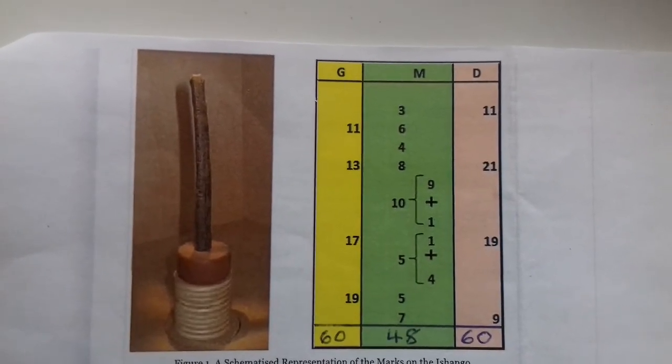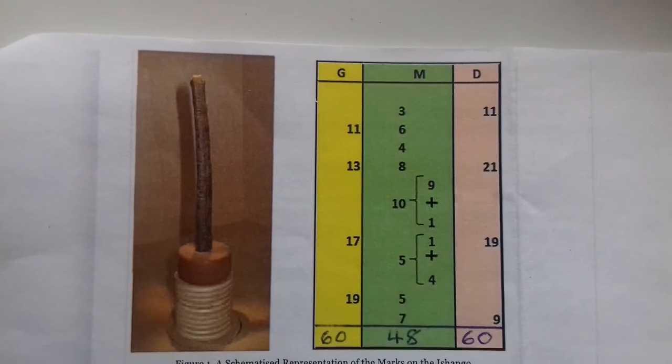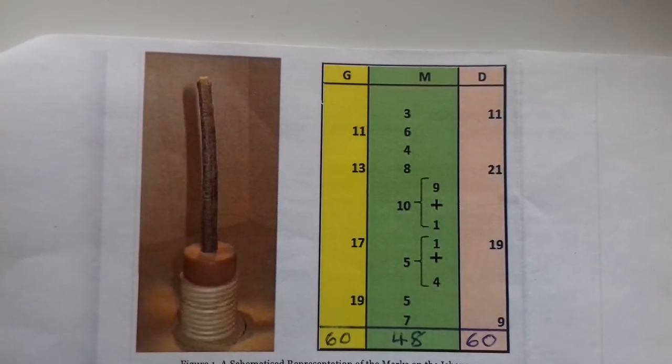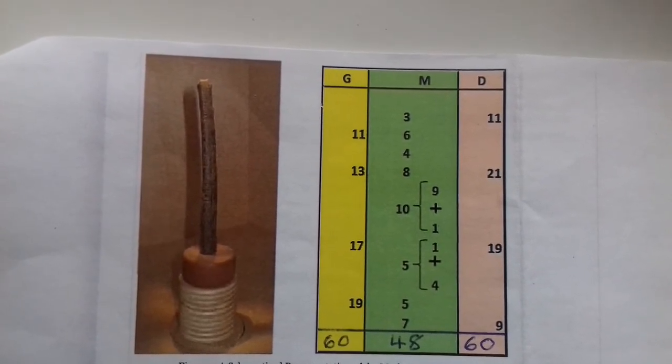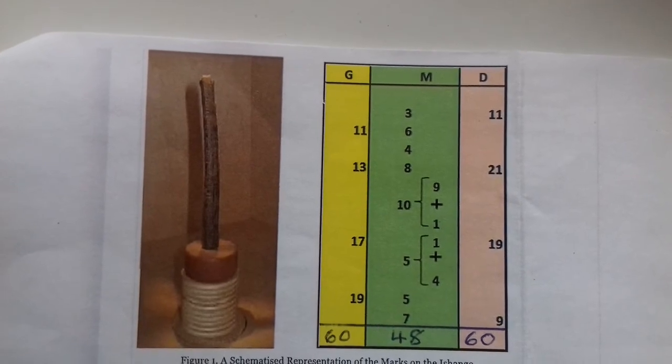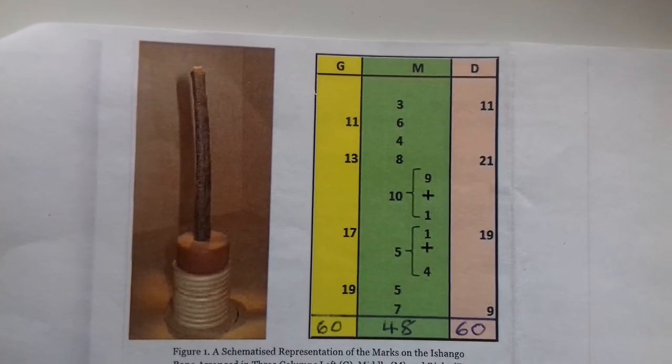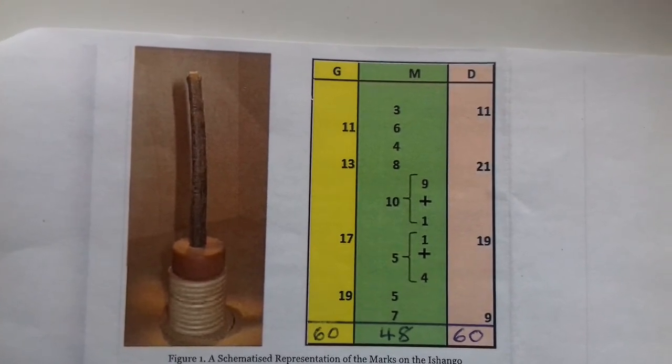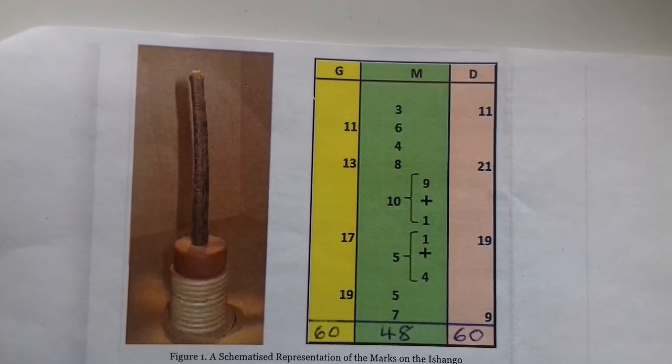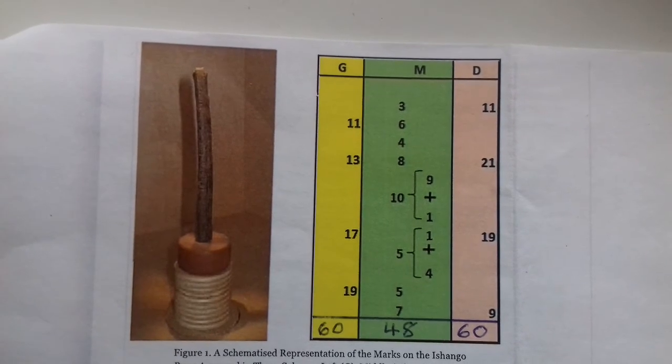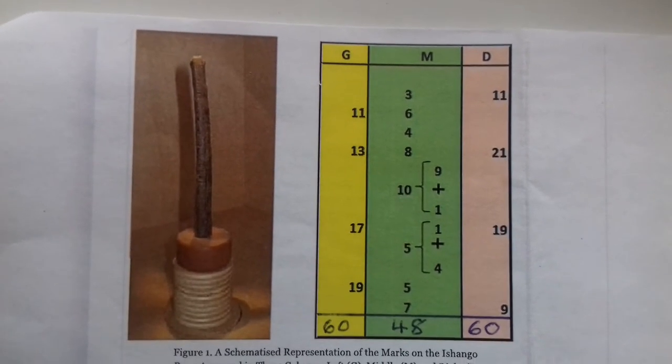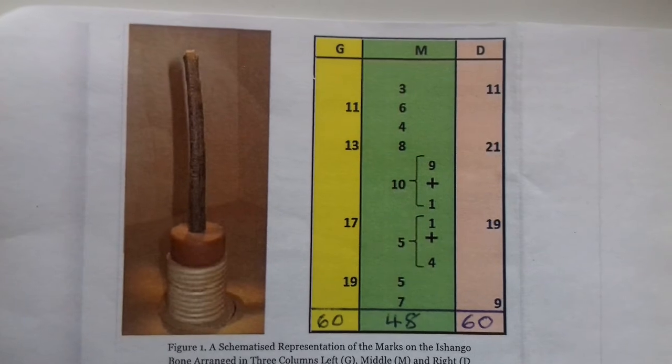We note that these numbers all consist of copies of other numbers. 6 contains 2 copies of 3, 8 contains 2 copies of 4, 9 contains 3 copies of 3, 10 contains 2 copies of 5, and we note here, as shown on the bone, the tally of 10 is followed by the tallies of 5 and 5.